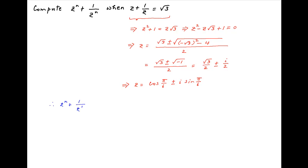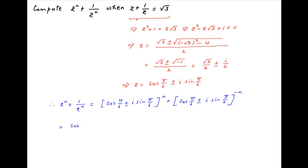Substituting these values of z in the expression z raised to the power n plus 1 upon z raised to the power n, we get (cos(π/6) ± i·sin(π/6))ⁿ plus (cos(π/6) ± i·sin(π/6))^(−n). Using De Moivre's theorem, this equals cos(nπ/6) ± i·sin(nπ/6) plus cos(−nπ/6) ± i·sin(−nπ/6).